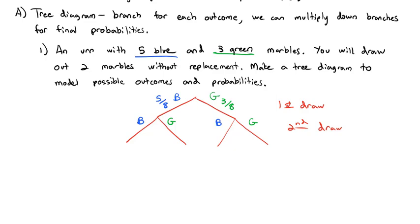If we go down the left side where blue was drawn first and we want a blue on the second draw, there are only four blues left to pick from and only seven marbles left total. So we have a four-sevenths chance of getting a blue marble on the second draw given the first draw was blue. Similarly, for blue then green, there are still three green marbles left out of the seven remaining.